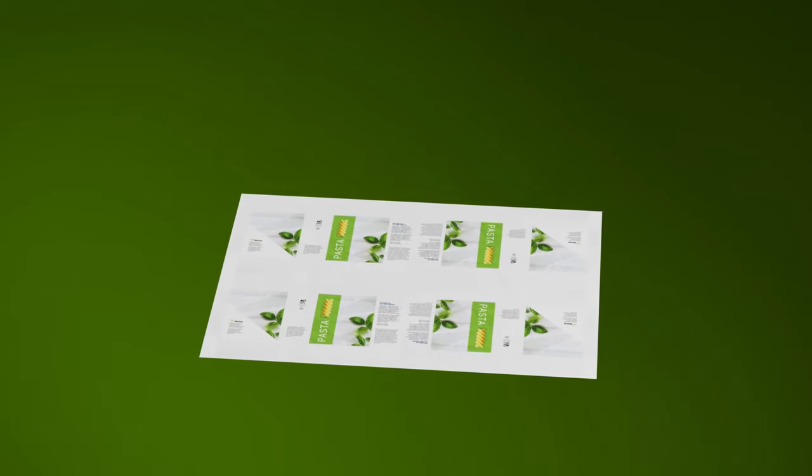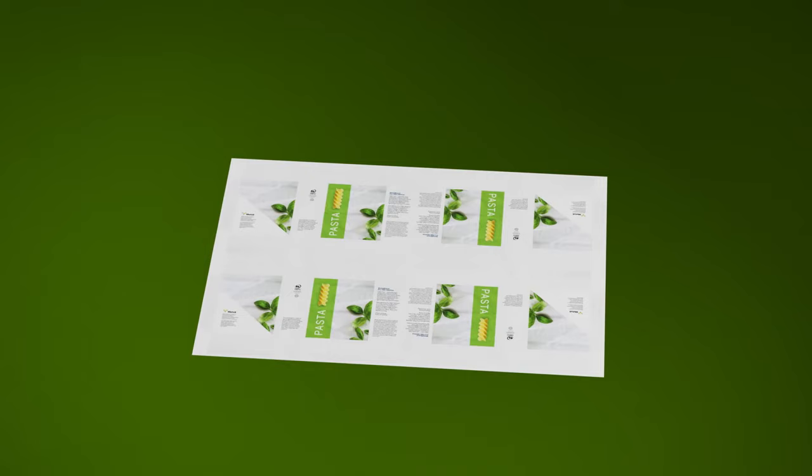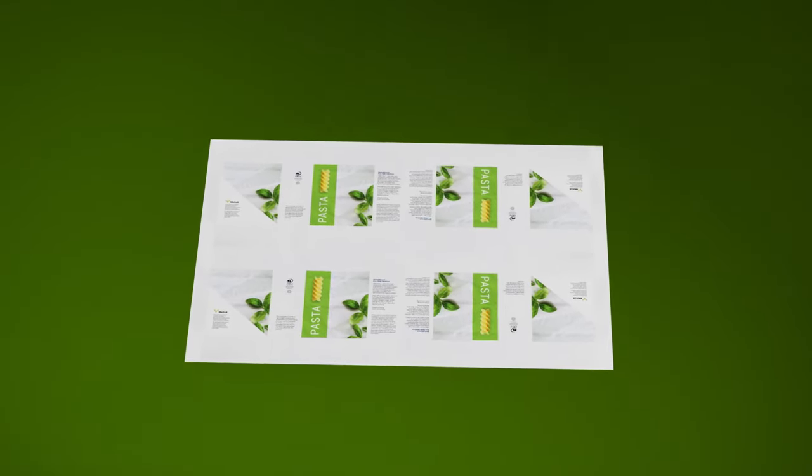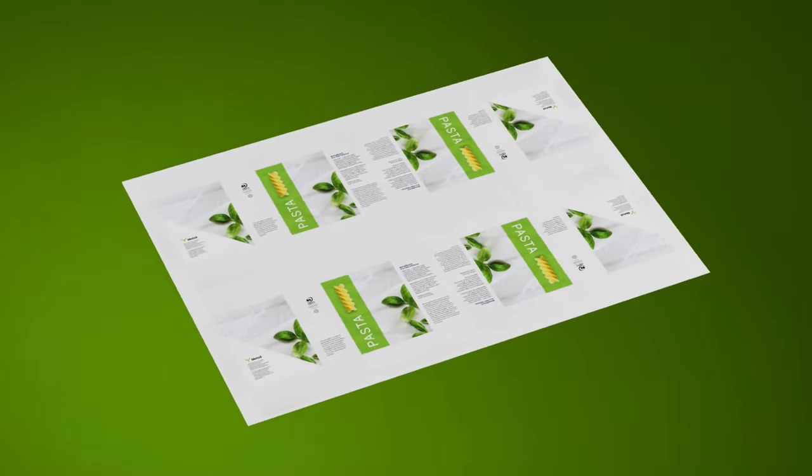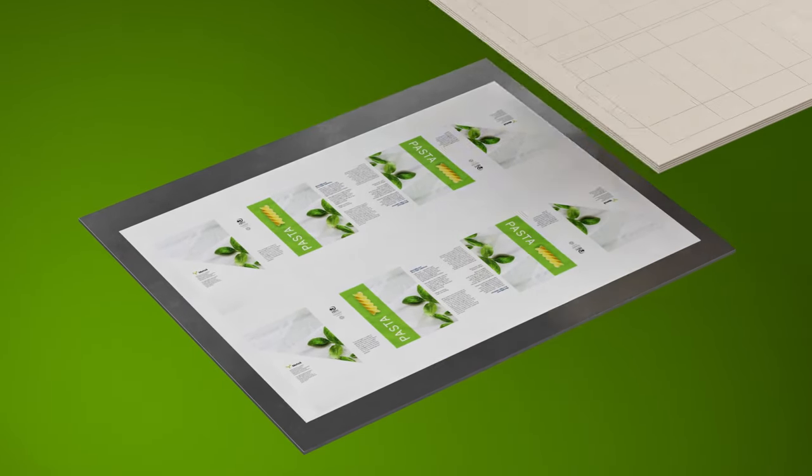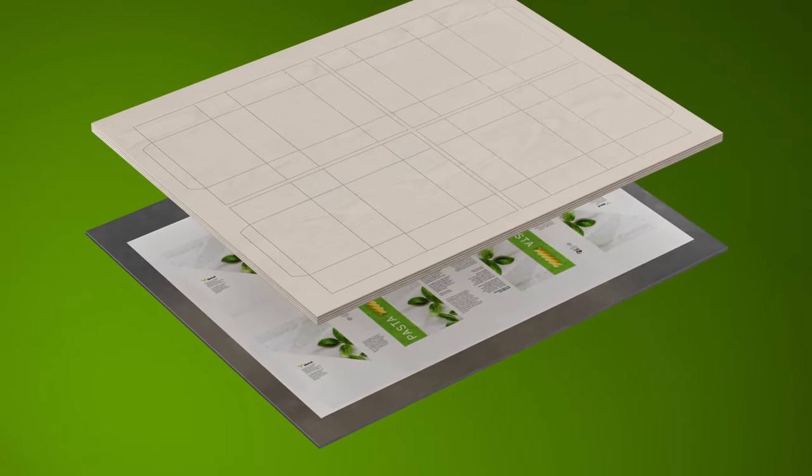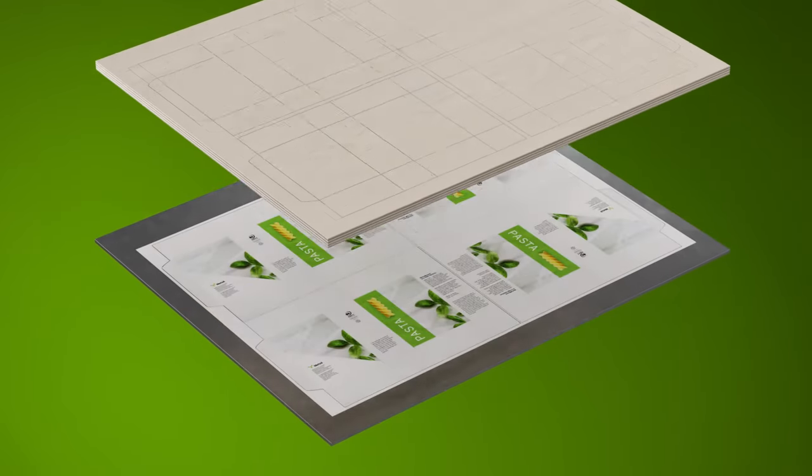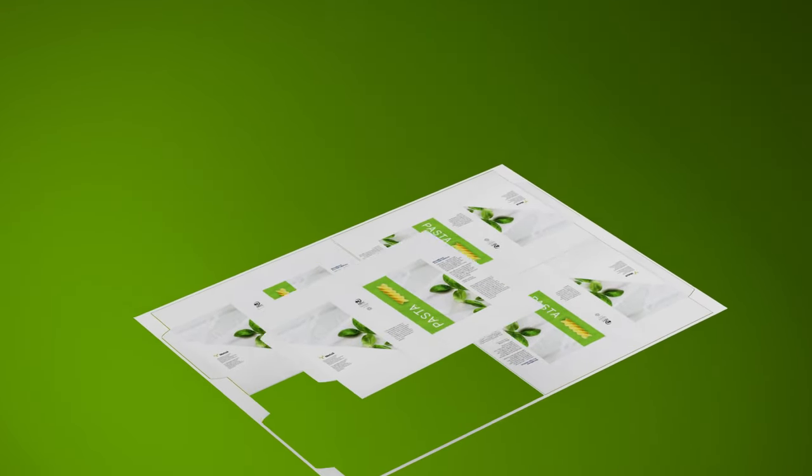In folding carton production, the board is first printed with a packaging design. A printed sheet or web includes several carton blanks, which are then separated in the die-cutting process. During this process, the blanks are cut and creased, which allows the cartons to be folded later.